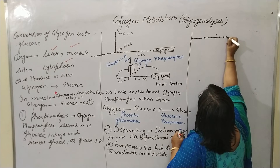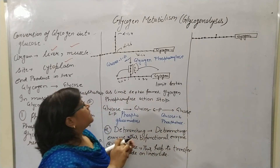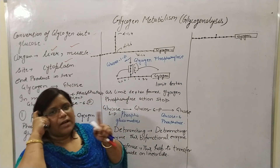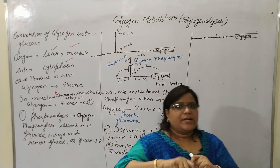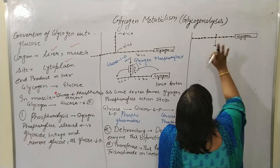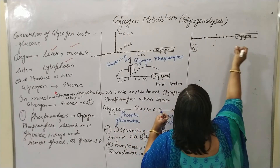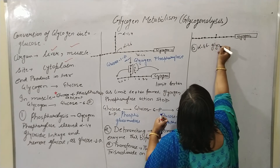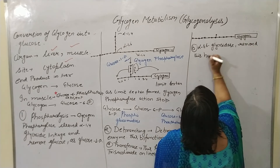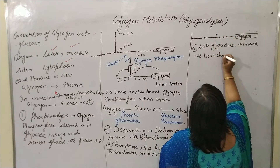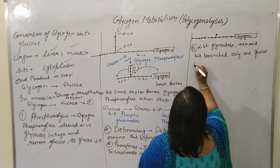After the transferase action, one glucose unit remains attached at the branching point. The second part of the debranching enzyme, part 2, is alpha-1,6-glycosidase. This enzyme removes that single branched glucose as a free glucose.